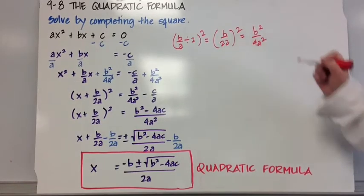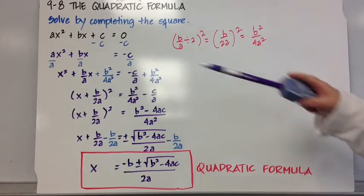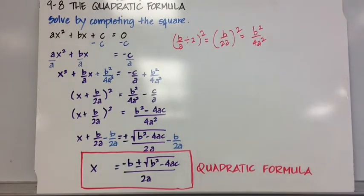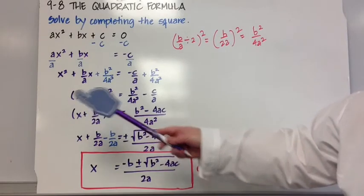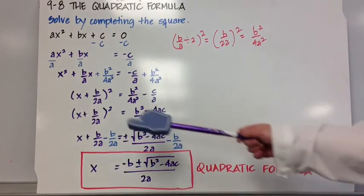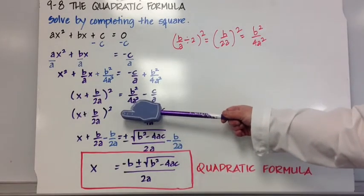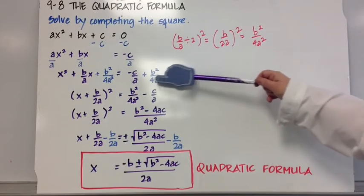Not real pretty, but that's what it is. So I'm going to add b squared over 4a squared to both sides of my equation. That makes the left-hand side of my equation a perfect square. I can put that in factored form as the quantity x plus b over 2a squared, and that's equal to b squared over 4a squared minus c over a.